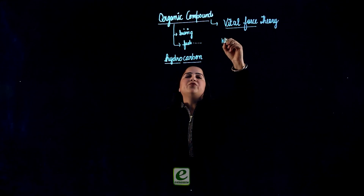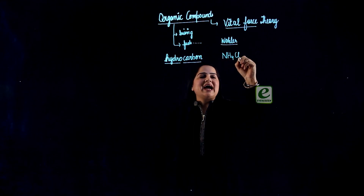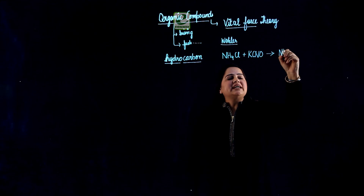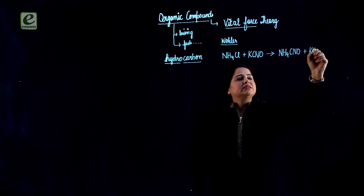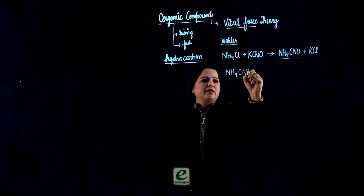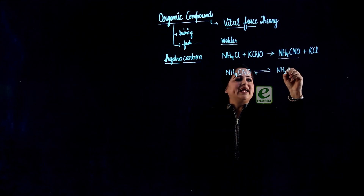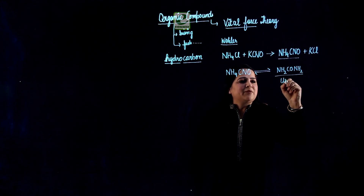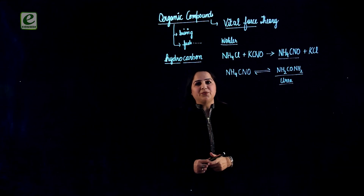But Wöhler proved it wrong. He heated a mixture of ammonium chloride and potassium cyanate, and found that a reaction took place resulting in the formation of ammonium cyanate and potassium chloride. This ammonium cyanate underwent a rearrangement reaction on continuously being heated and resulted in the formation of NH2-CO-NH2. This is the first organic compound prepared in a laboratory and this compound is known as urea.